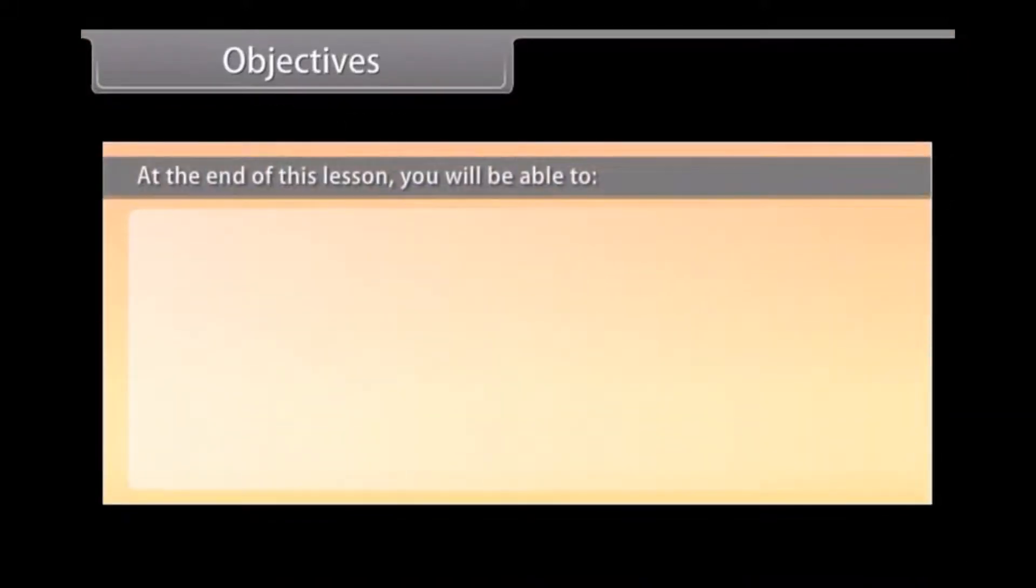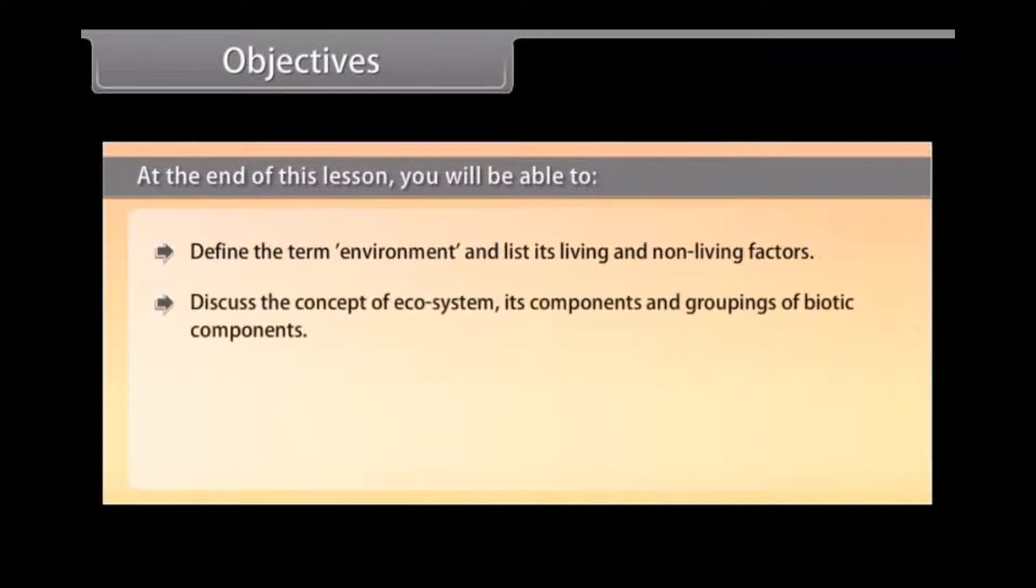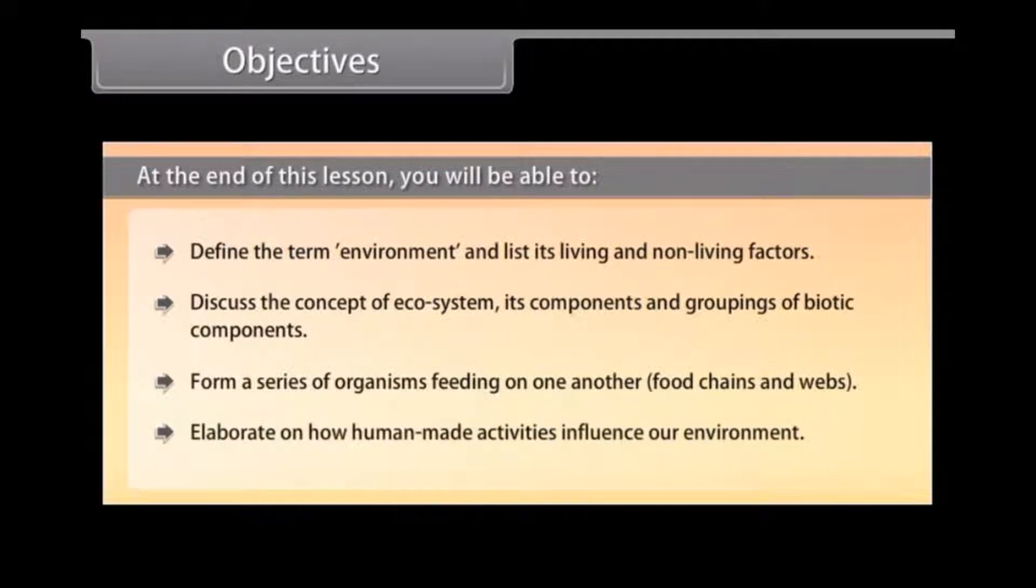Objectives. At the end of this lesson, you will be able to define the term environment and list its living and non-living factors, discuss the concept of ecosystem, its components and groupings of biotic components, form a series of organisms feeding on one another, food chains and webs, and elaborate on how human activities influence our environment.